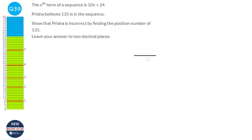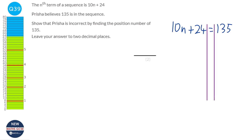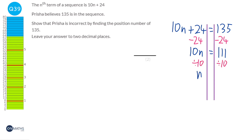To see if a number is in a sequence, we get the nth term and set it equal to the number we think is in the sequence. If the number is in the sequence we'll get an integer for n; if not, we'll get a decimal. Solving: 135 take away 24 is 111. Dividing both sides by 10 gives n = 11.1, which is not an integer. So 135 cannot be in that sequence.